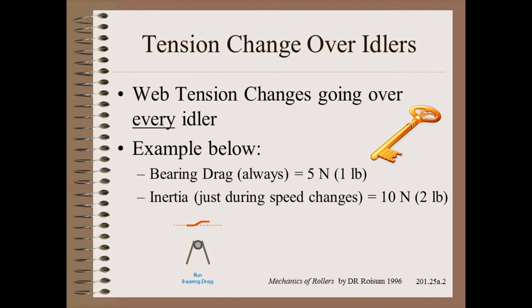If we speed up, we have the ever-present tensioning of 5 newtons, to which we add 10 newtons more as the web pulls metal up to speed, for a total of 15 newtons. The opposite happens during deceleration, where we have 5 minus 10, or a minus 5 newtons of tension change. In severe cases, the web can actually go slack during a machine's slowdown. We will simplify the problem by only looking at the steady state run condition — that may be problem enough, and speed changes will only make this worse.